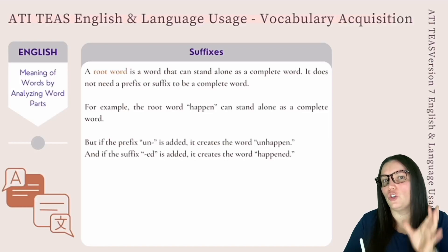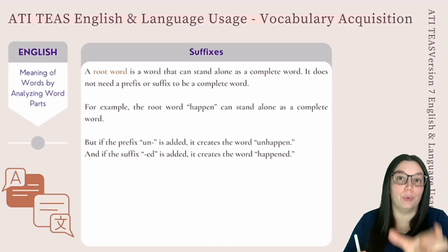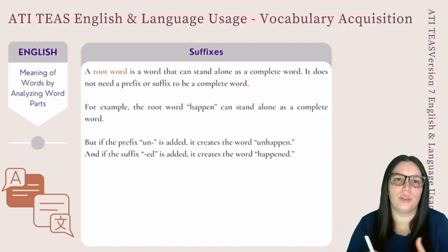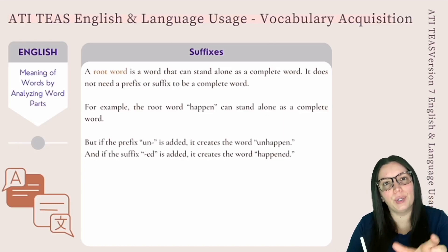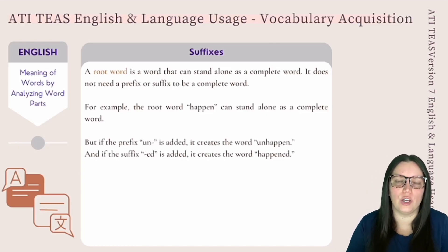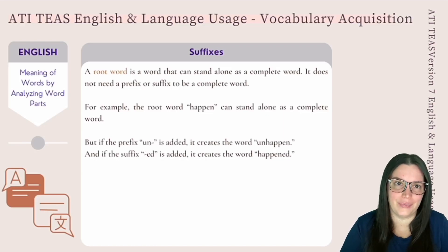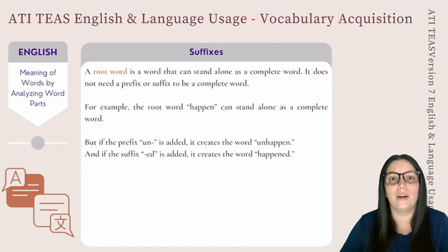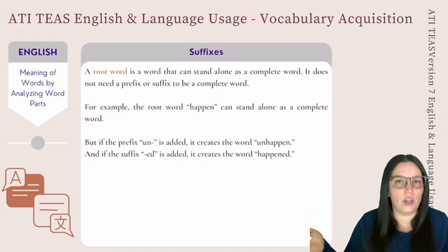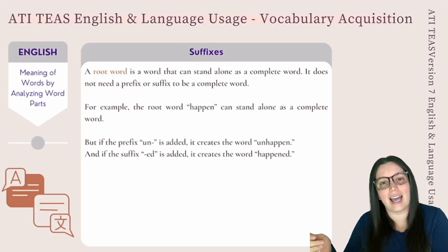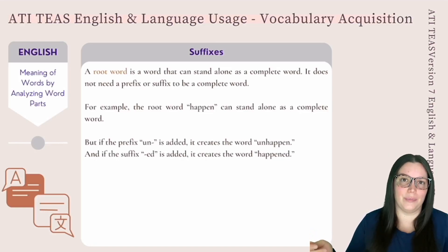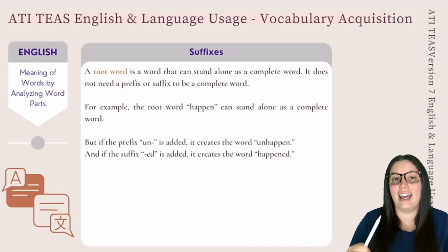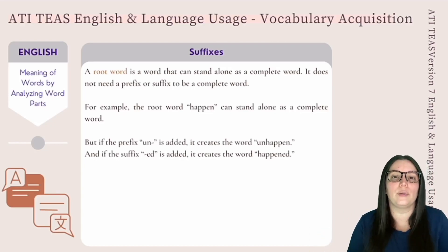Sometimes you're going to have to look at the root word to determine what the word means. A root word is a word that can stand alone as a complete word — it does not need a prefix or suffix. For example, "happen" can stand alone. But if the prefix "un-" is added, it creates "unhappen," and if the suffix "-ed" is added, it creates "happened."